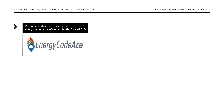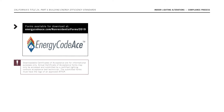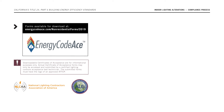All forms are available for download as PDFs on www.energycodeace.com. Note: downloadable certificates of acceptance are for informational purposes only. Actual certificate of acceptance forms may only be accessed and submitted by a certified lighting controls acceptance test technician. The submitted forms must have the logo of an approved acceptance test technician certification provider, or ATTCP.